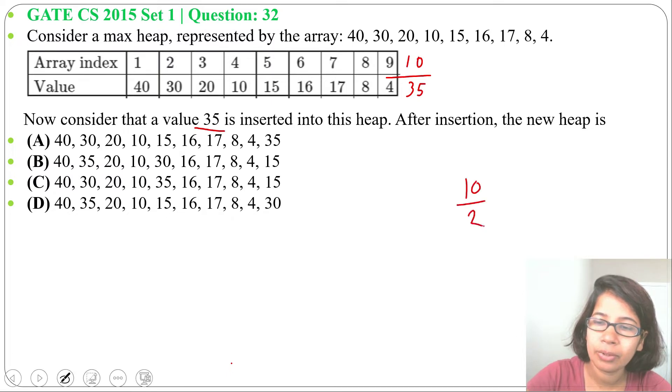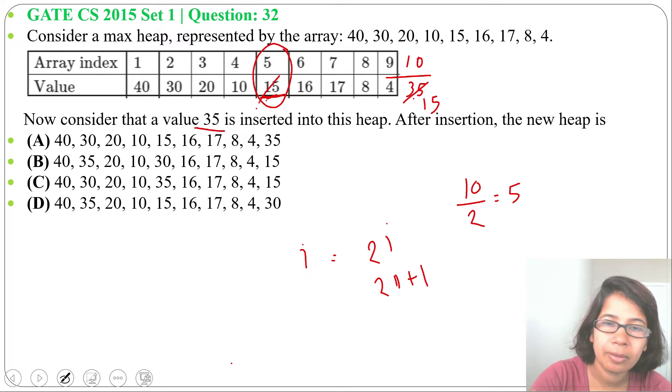For index 10, what will be its parent? 10 divided by 2 is 5. For index i, its left child will be 2i and right child will be 2i plus 1. Index 5 is its parent, so the node is 15. Since 35's parent is 15, we'll heapify this. 15 will come here and 35 will come here.